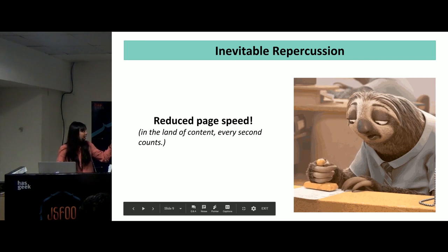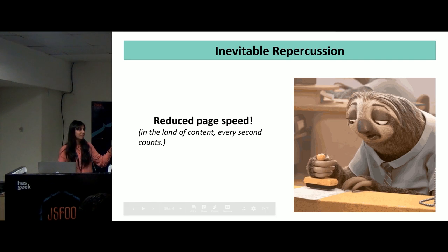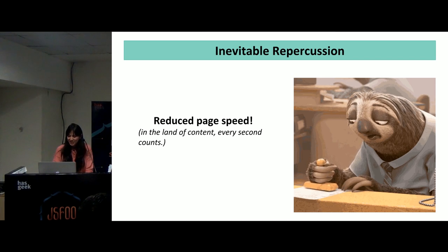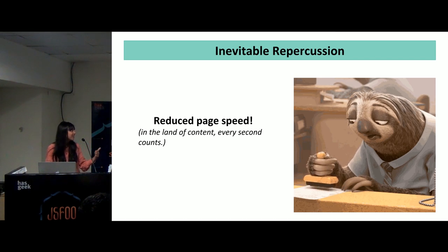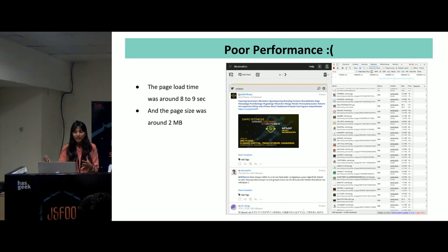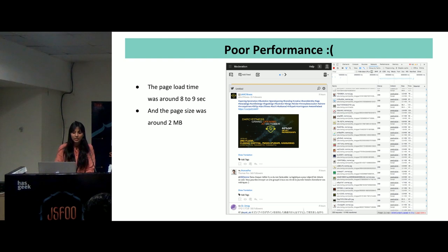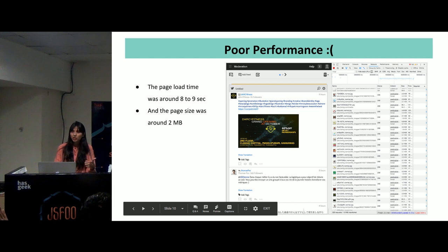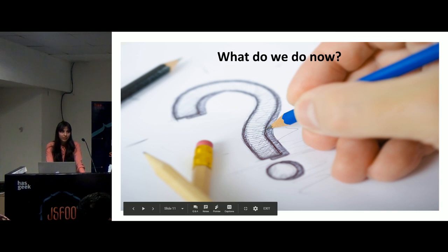And the third was poor performance. I've deliberately put this sloth image here because at that time our website was getting rendered even slower than this. The page load time was around 8 to 9 seconds and the page size was around 2MB. And if I was in an area with really poor internet connectivity, and each of these API calls took 5 to 6 seconds, I would be getting my page rendered in a whole 18 seconds — which was too much and quite expensive for us. We definitely had a problem here.